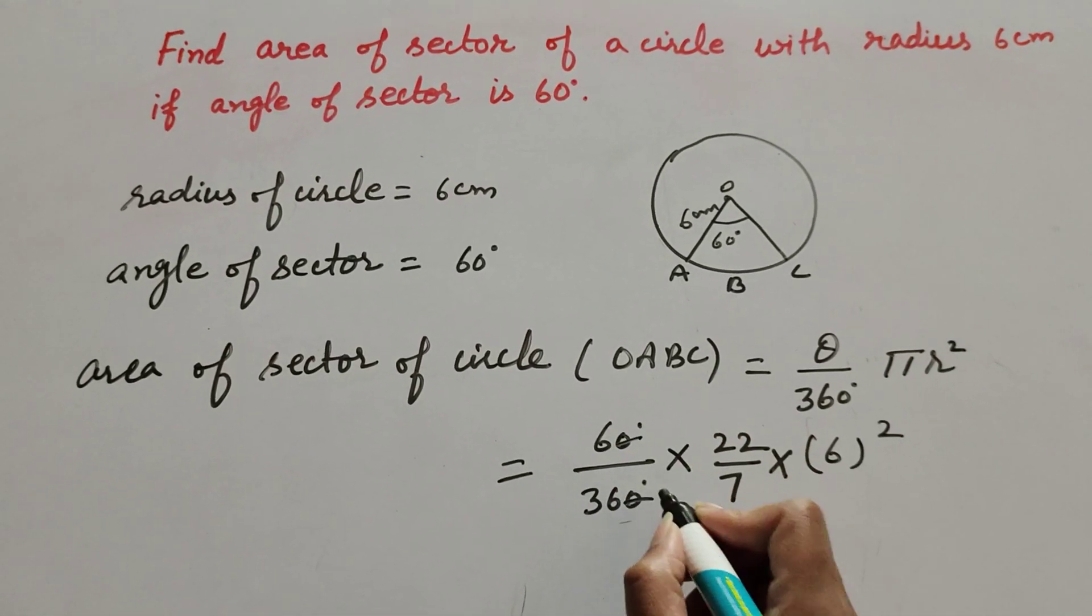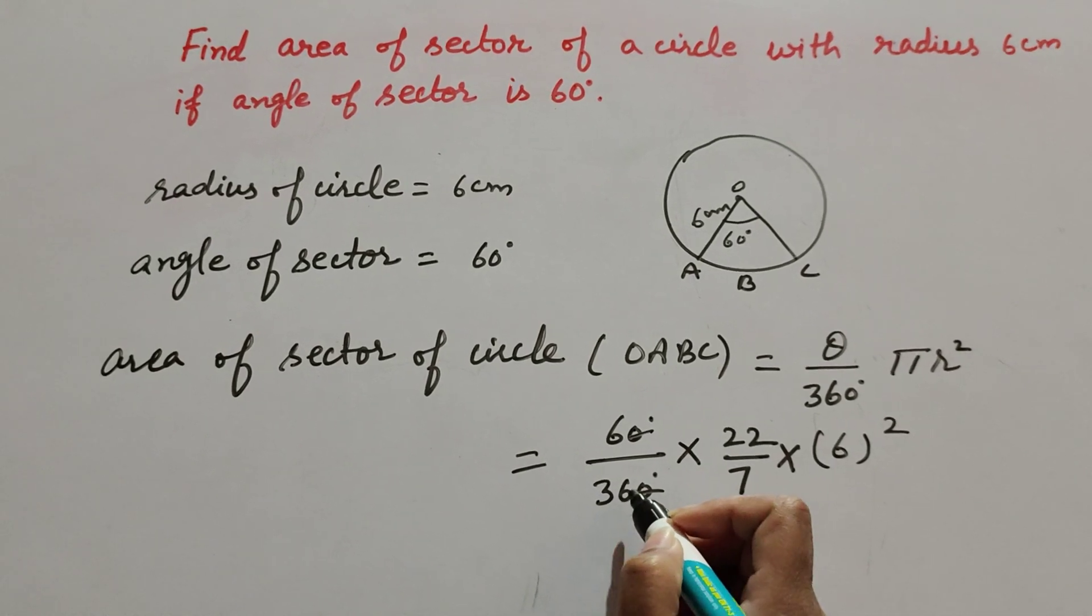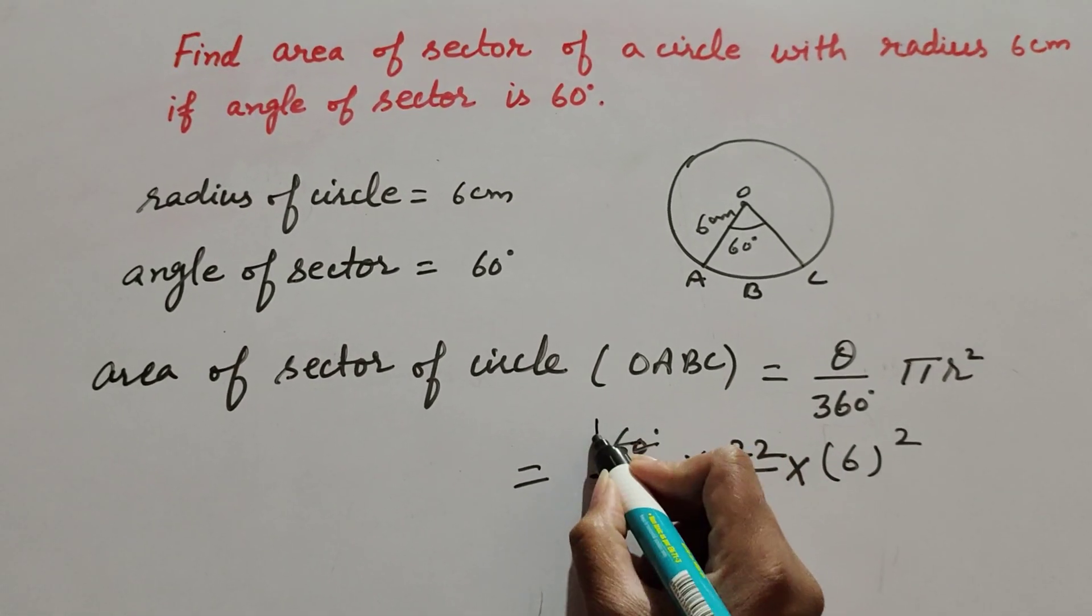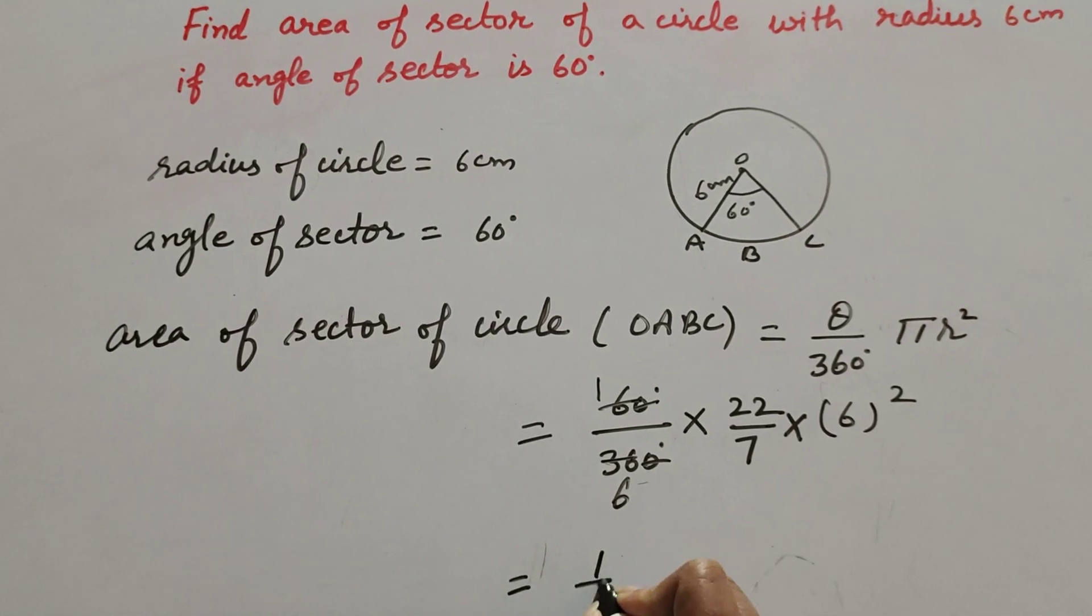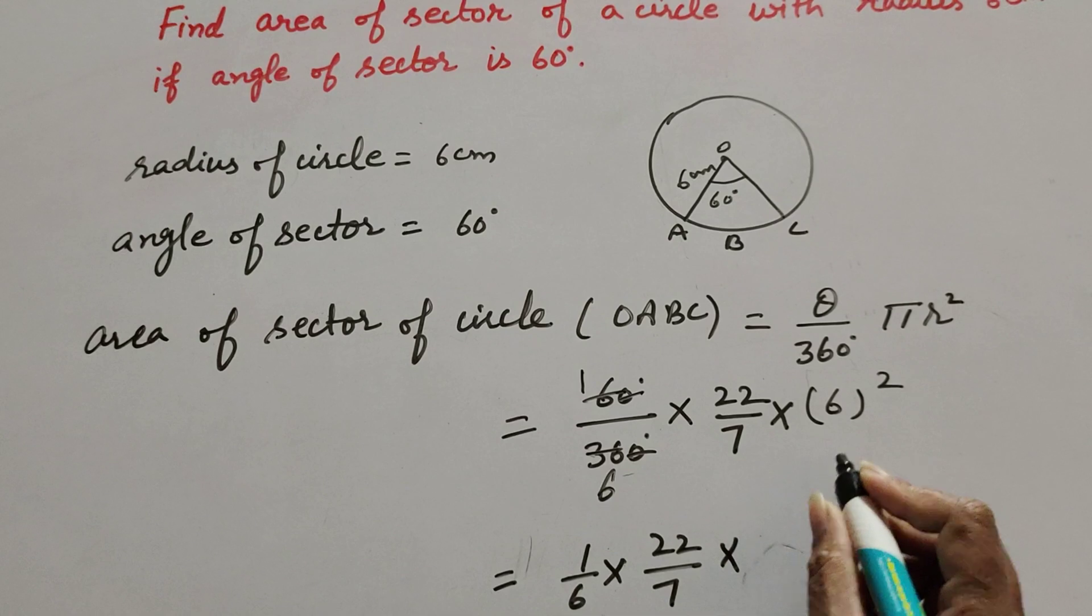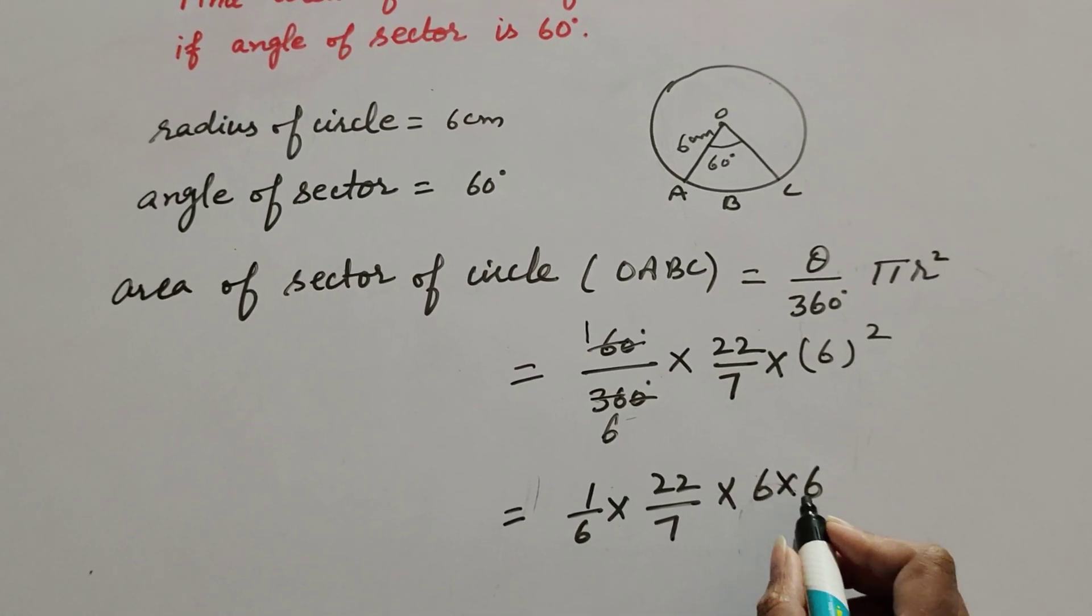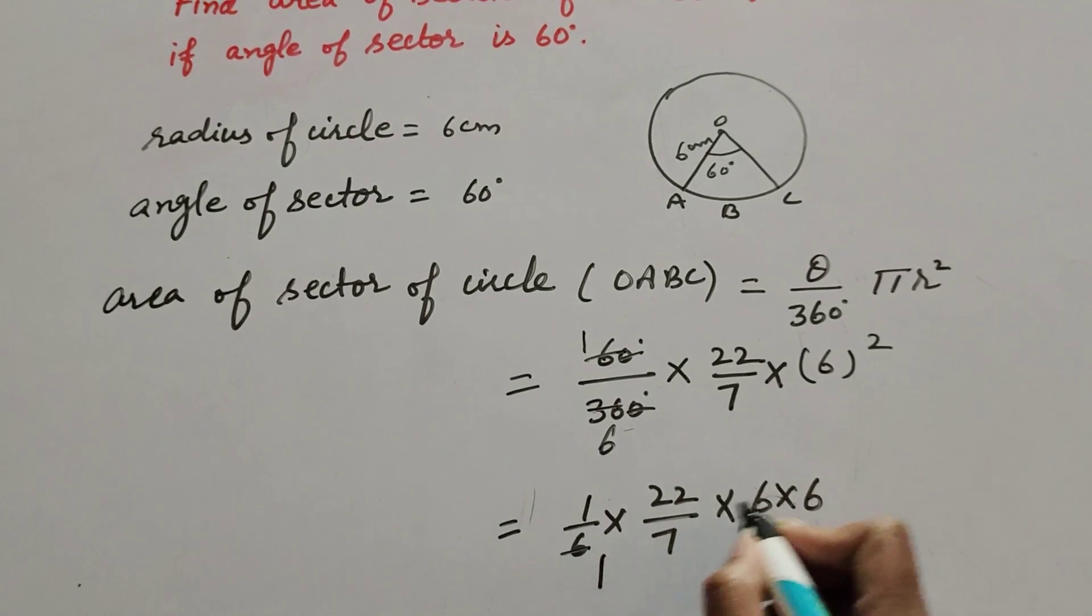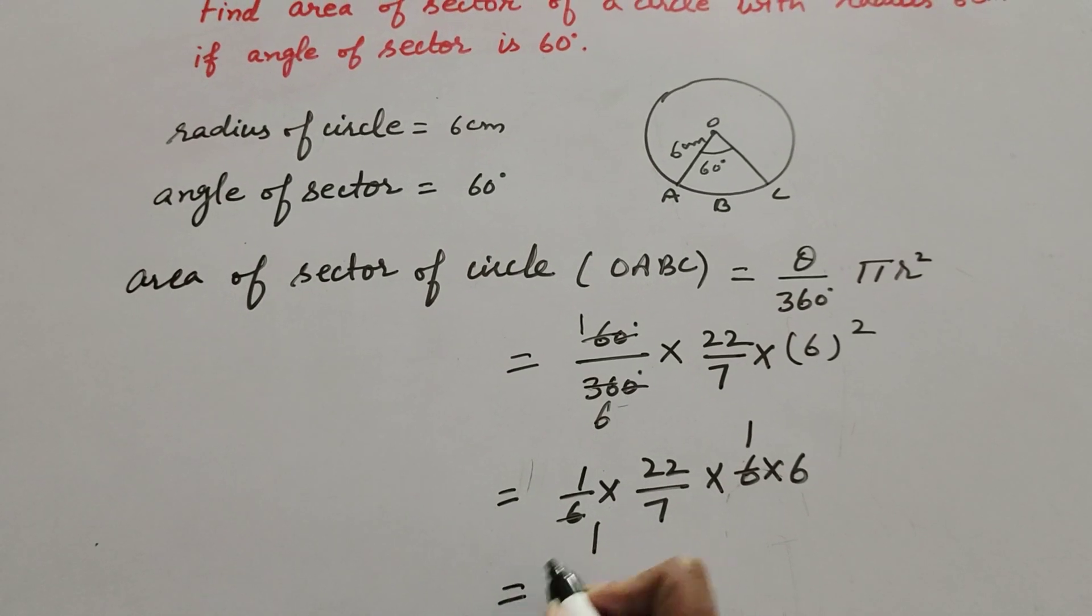Now 0 in numerator, 0 in denominator both are cancelled. 6 and 36 both are divisible on the table of 6, so we cancel them. So it is equal to 1 over 6 multiply 22 over 7 multiply 6 square. So 6 in denominator, 6 in numerator both are cancelled. So 22 multiply by 6 is equal to 132 over 7.